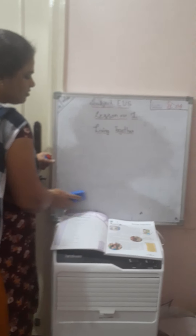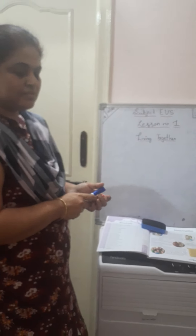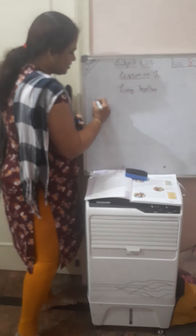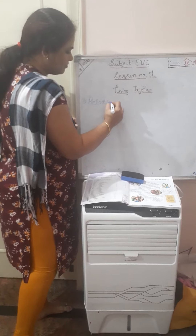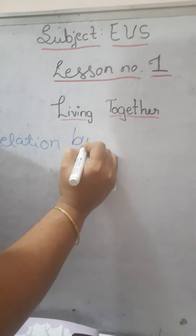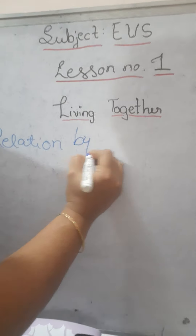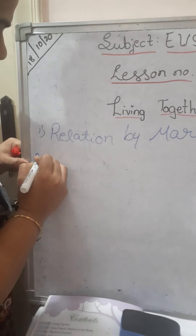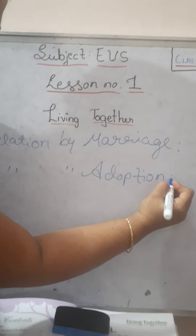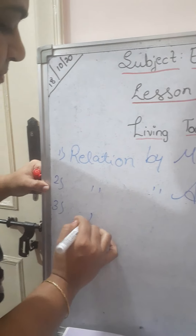The family members, they are going to relate to each other. How they are going to relate? They are also having three types of relations. Relation by marriage, relation by adoption, and relation by birth.